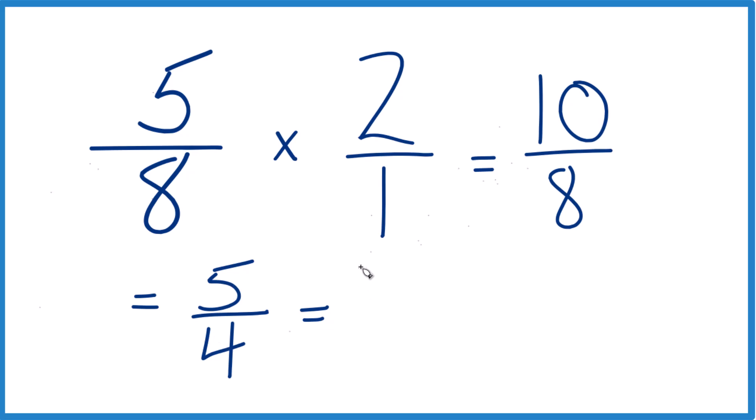Let's do this. 4 goes into 5 one time. 1 times 4 is 4. Then we'd have 1 left over. Bring that 4 across. So 5 eighths times 2 is also 1 and 1 fourth.